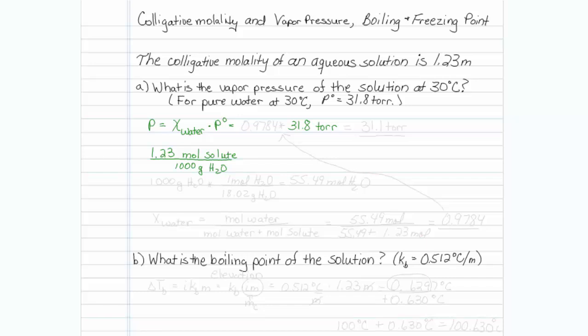If we were to take 1,000 grams of water, we know for sure we'd have 1.23 moles of solute and 1,000 grams of water. Wouldn't it be nice if we knew how many moles of water that was? We will divide by the molar mass of water, 18.02 grams of H2O per 1 mole of H2O, which equals 55.49 moles of H2O.